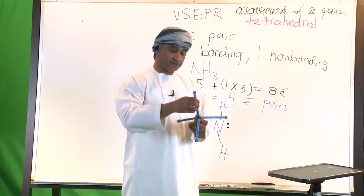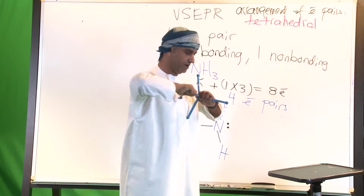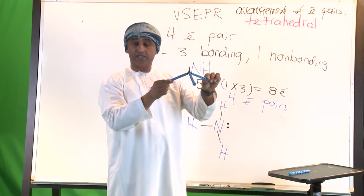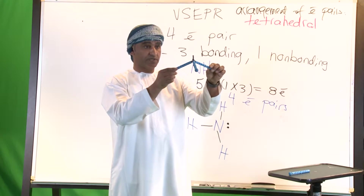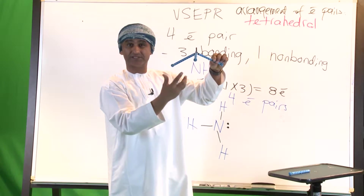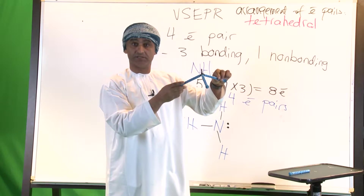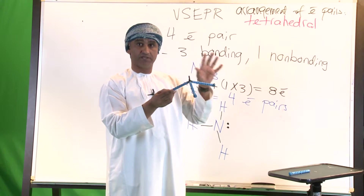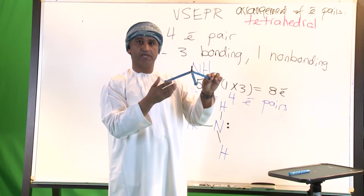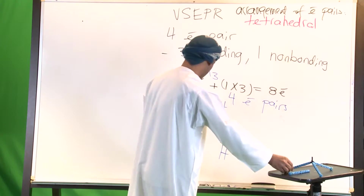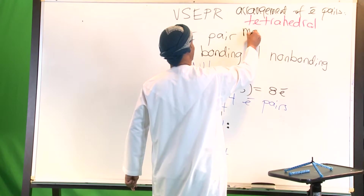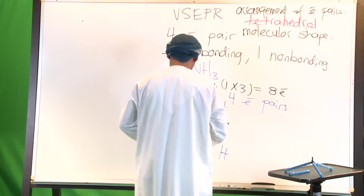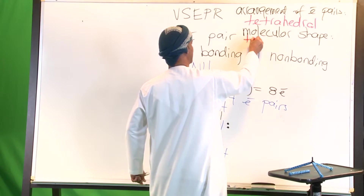The molecular shape, however, may not be tetrahedral because of the lone pair. If we remove one bond position to represent the lone pair, the resulting shape is no longer tetrahedral — it looks like a pyramid with a triangular base. The molecular shape in ammonia is therefore trigonal pyramidal.